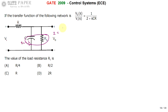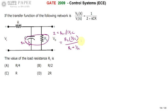So Z can be written as RL in parallel with 1/sC, which is similar to R1 parallel R2 = R1·R2/(R1+R2). Here it becomes (RL · 1/sC) divided by (RL + 1/sC), which simplifies to RL/(sC) divided by (sCRL + 1)/sC.